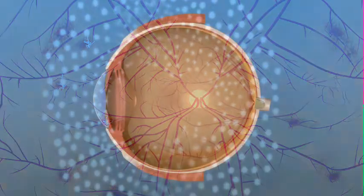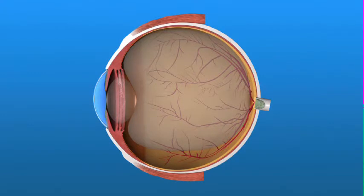To help the retina heal in place, the ophthalmologist may place a gas bubble or silicone oil in the vitreous space. The gas bubble will gradually dissolve on its own. Removal of the silicone oil requires an additional procedure. Use of a gas bubble or silicone oil is reserved for eyes with retinal detachment or advanced scar tissue.